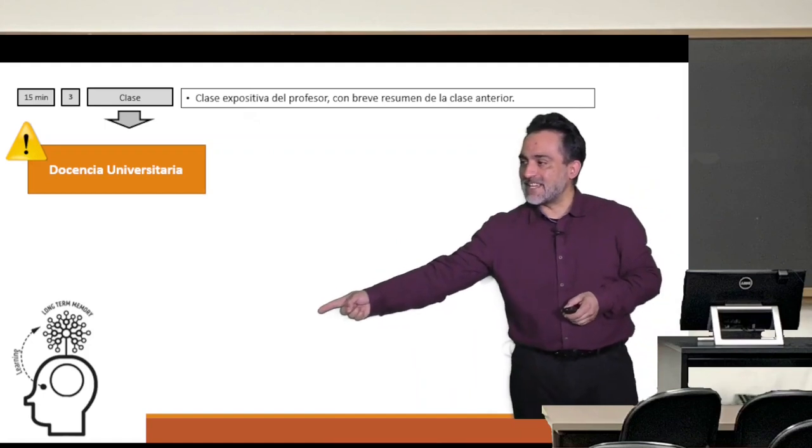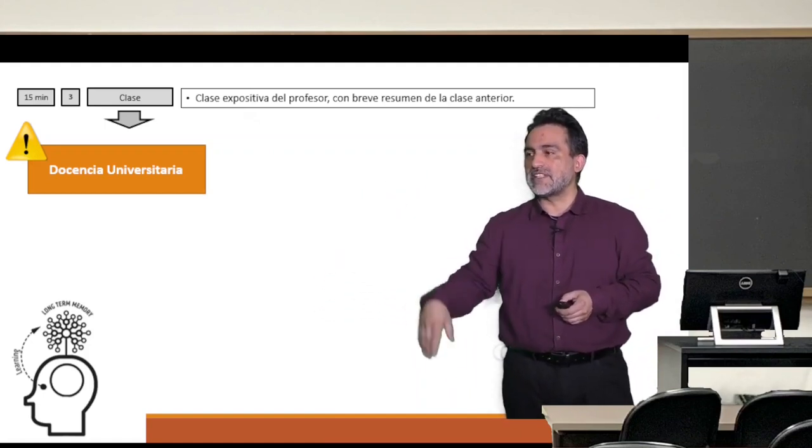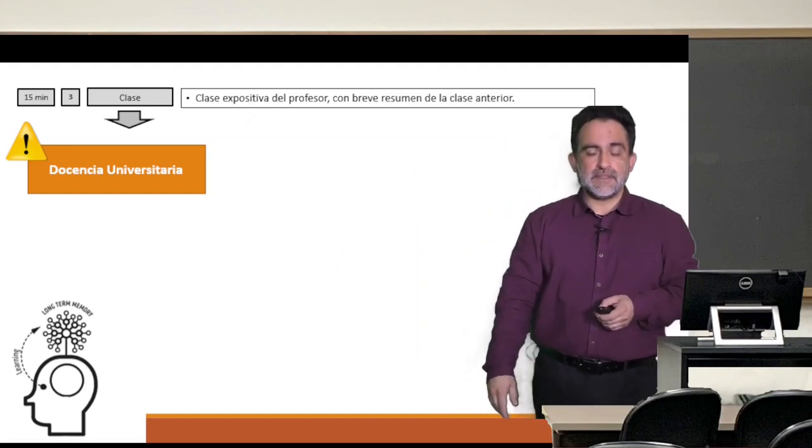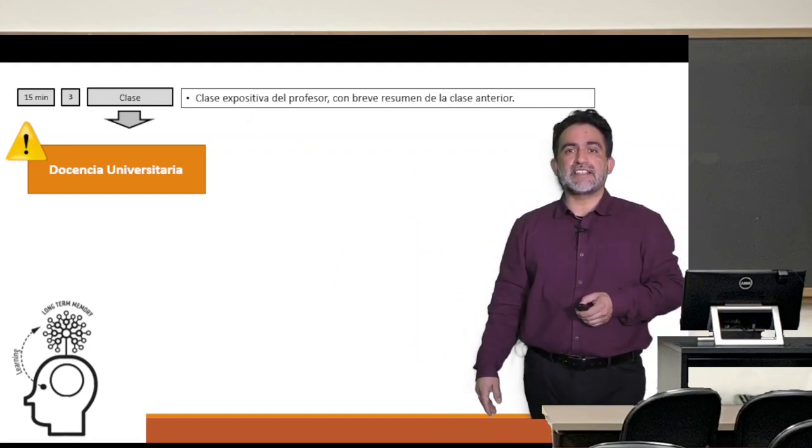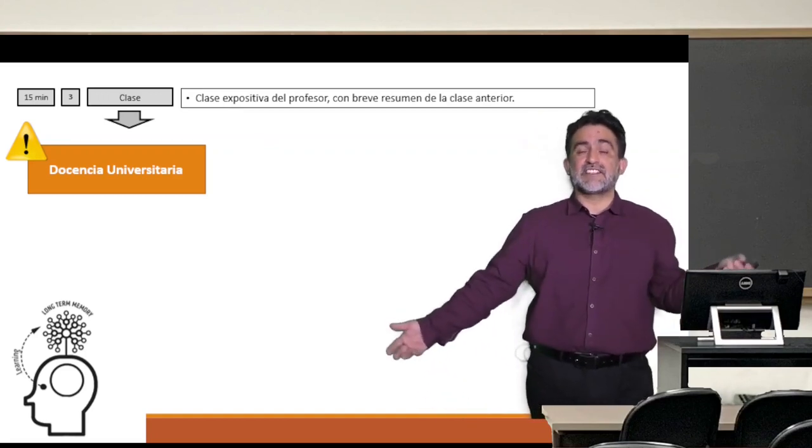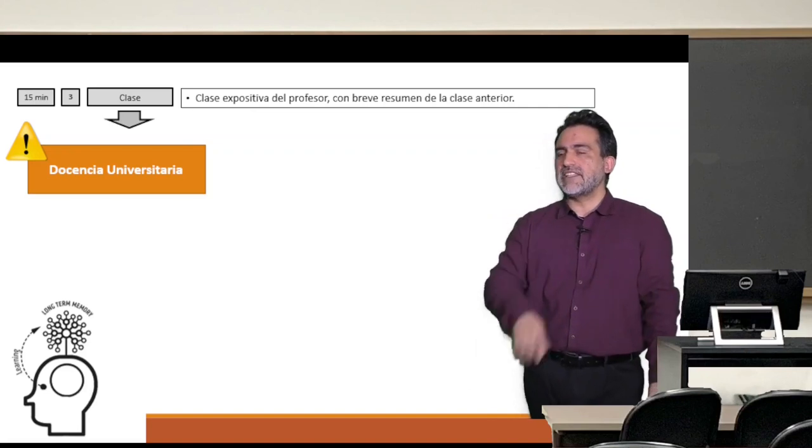And now we're going to go to the other part of the outline, which is precisely the learning process and the class itself. My idea is that university teachers don't stop doing what they already know how to do relatively well, which is the expository class, but let's give it a twist and do it slightly differently.